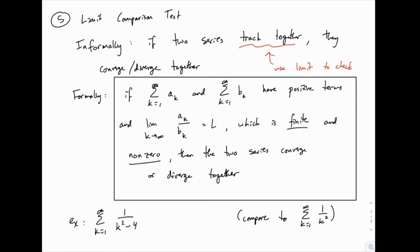At the end of looking at the direct comparison test, we found that it's kind of limited if the algebra doesn't work out in the right way, meaning we can't prove the inequality in the right direction, and the direct comparison test fails to tell us anything. So we turn to the limit comparison test, which is similar in the sense that we're going to compare our series to one that we know the answer for — generally either a p-series or a geometric series.